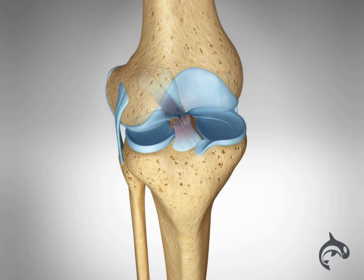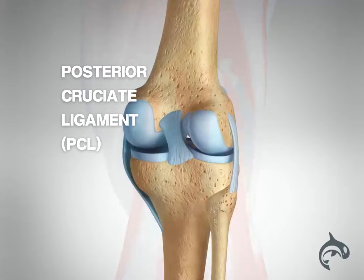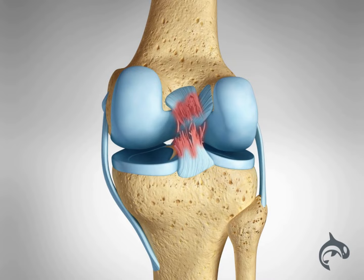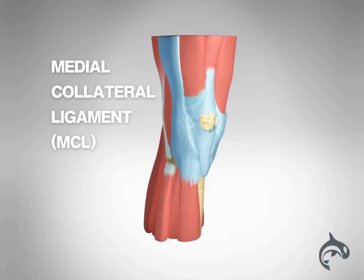The posterior cruciate ligament, or PCL, is located in the back of the knee and controls backward movement of the tibia. A PCL tear is less common than an ACL tear, but it can occur as a result of knee trauma like falling onto a bent knee or landing improperly after a jump.